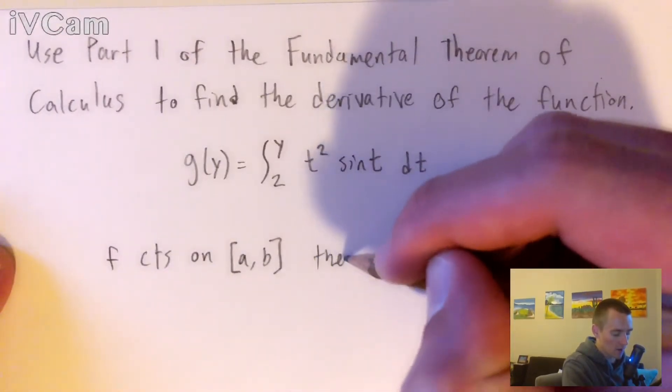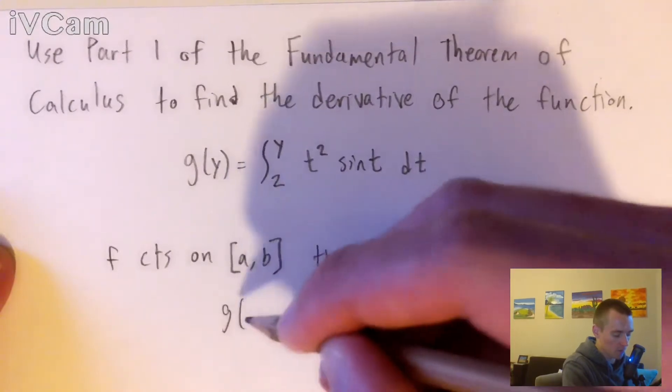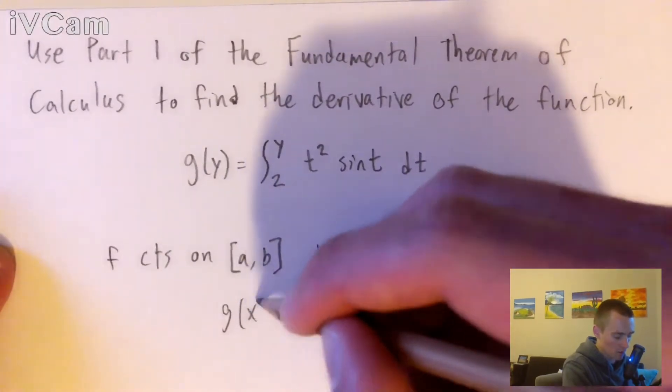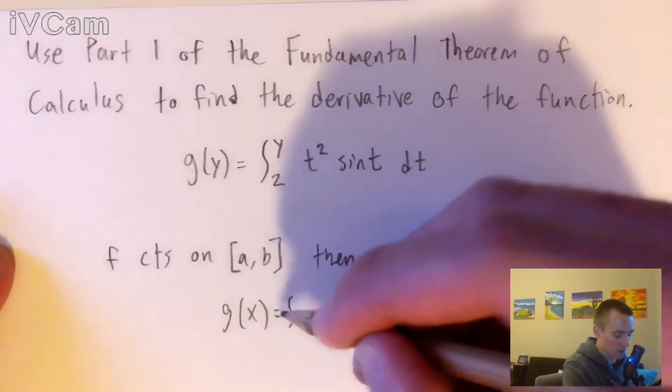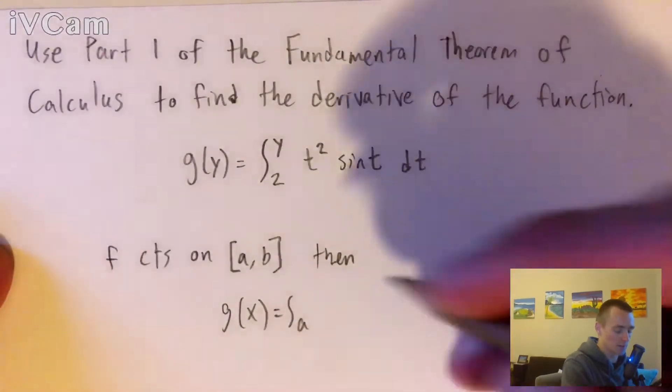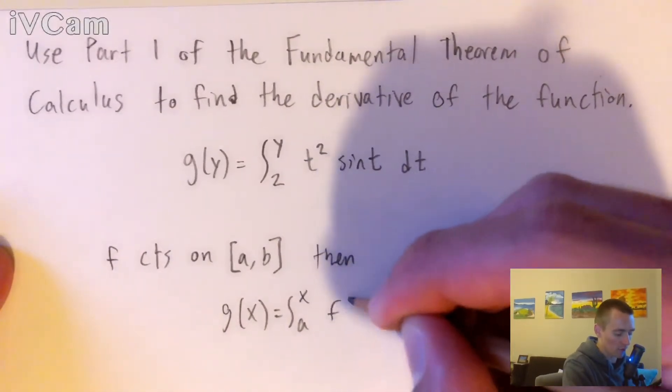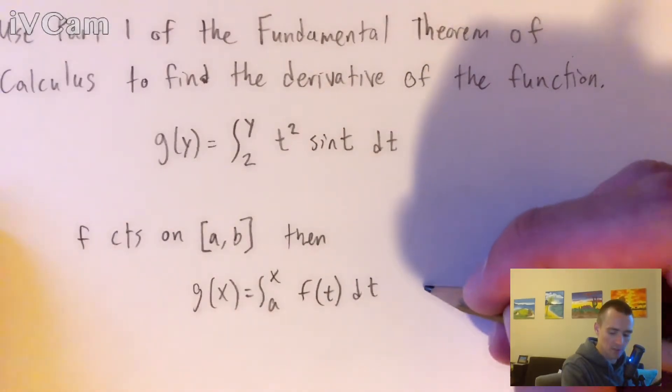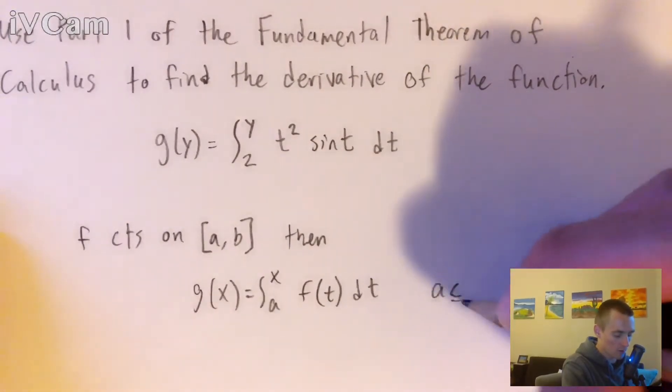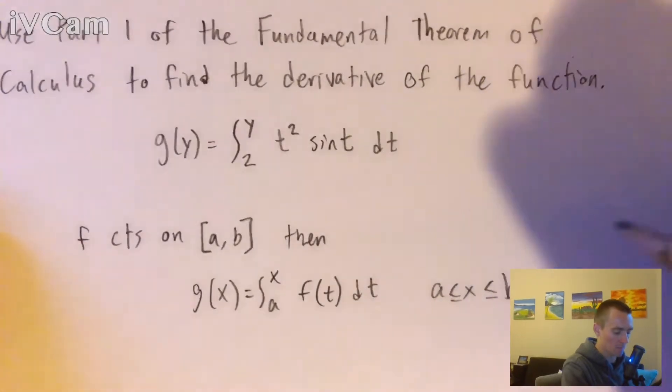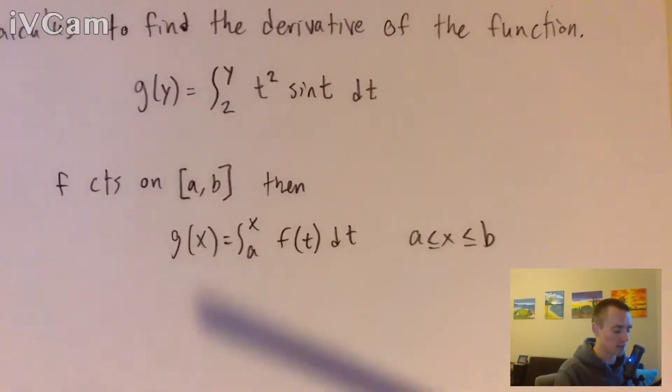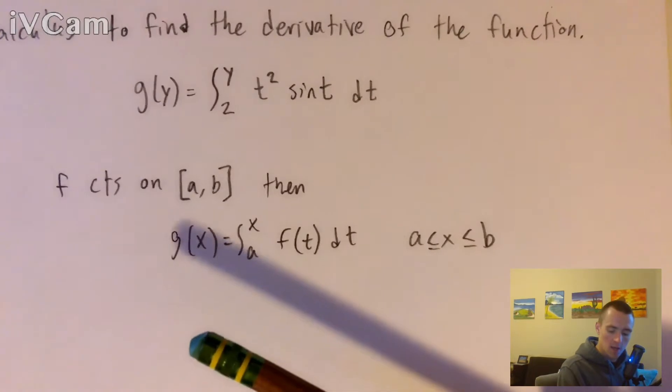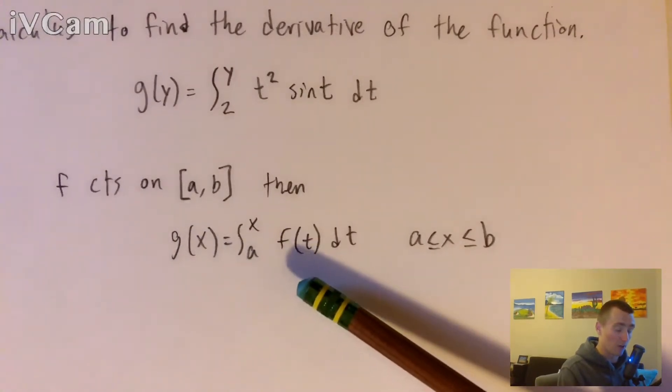then we can define this function g of x, which would just be the integral from a, some unknown constant a to x of our function f of t with respect to t. And this would be true on this entire interval from a to b. And the interesting thing about this function g is that it is an anti-derivative of f,